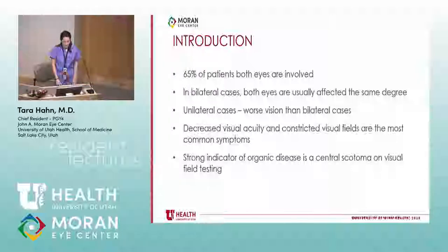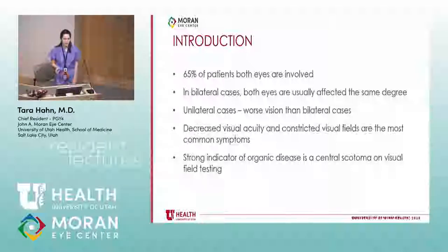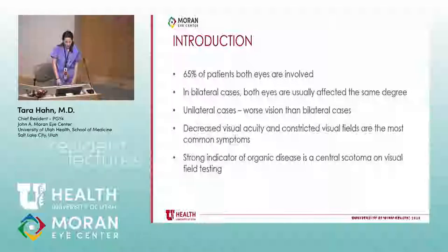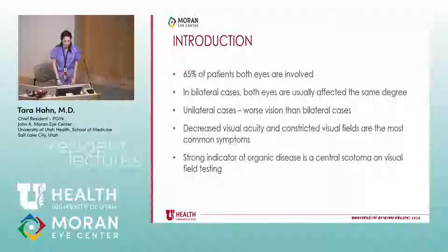In about 65% of people, both eyes are involved. In bilateral cases, both eyes are usually affected to the same degree. In unilateral cases, the vision loss in that one eye is usually worse than it would be in a bilateral case. Decreased visual acuity and constricted visual fields are the most common symptoms with functional vision loss. A strong indicator of organic disease is a central scotoma on visual field testing — that's a red flag, so rethink things if you see that.